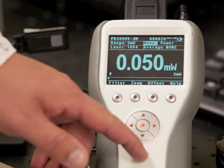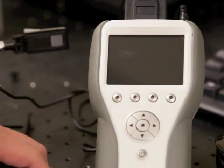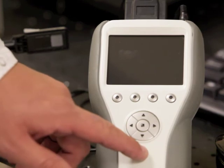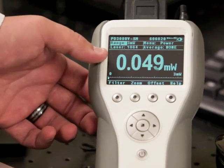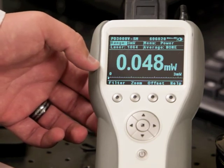And to make sure it's set as my default wavelength, I power the meter off, power it back on, and you can see that 1064 was saved as my default wavelength.